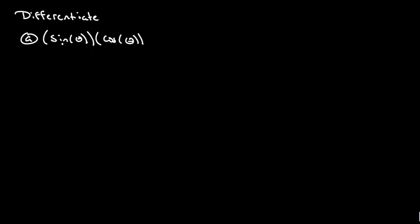In example number one, we're asked to differentiate the sine of theta times the cosine of theta with respect to the variable theta. Your book doesn't write parentheses to show that it's a function because it's understood, but it's good practice to write them. So we're going to take the derivative with respect to theta of sine theta times cosine theta.